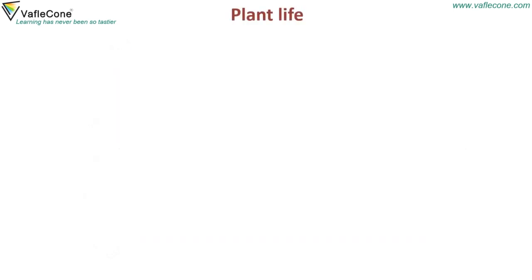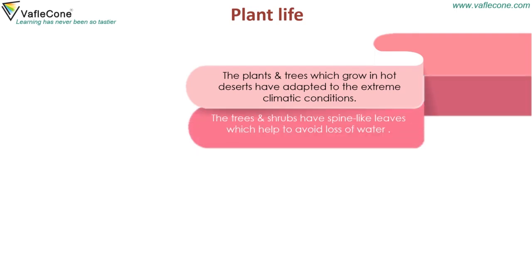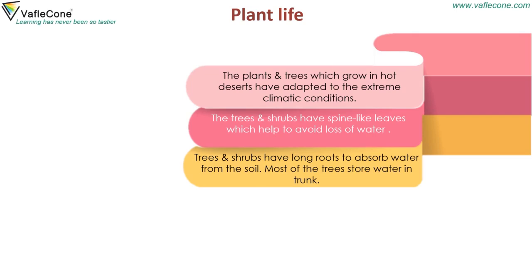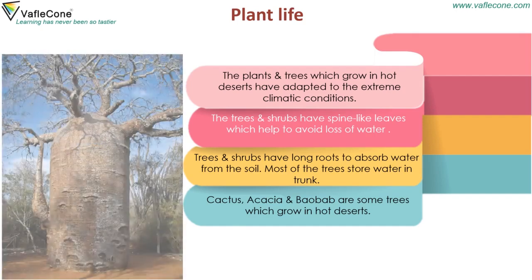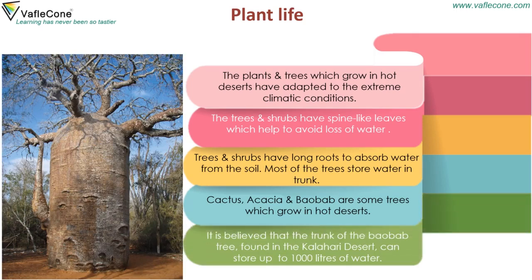Plant Life: The plants and trees which grow in hot deserts have adapted to the extreme climatic conditions. The trees and shrubs have strong roots to absorb water from the soil. Most of the trees store water in their trunk. Cactus, acacia and baobab are some trees which grow in hot deserts. It is believed that the trunk of a baobab tree found in the Kalahari desert can store up to 1000 litres of water.